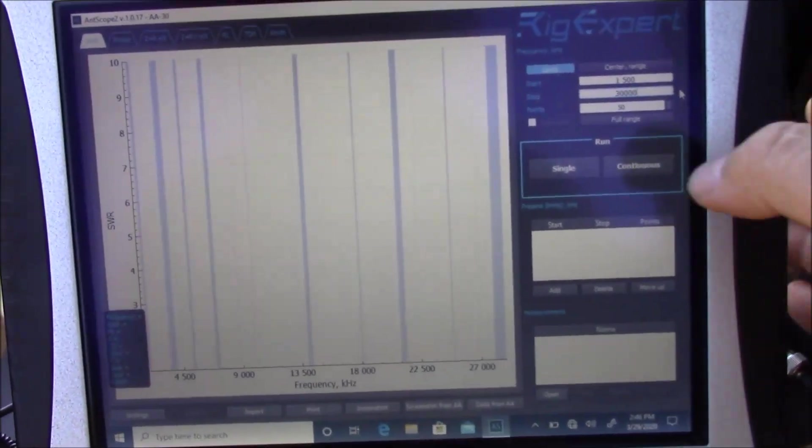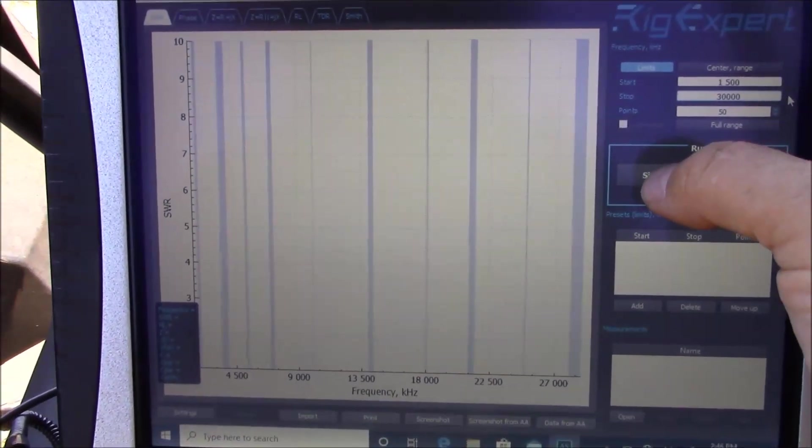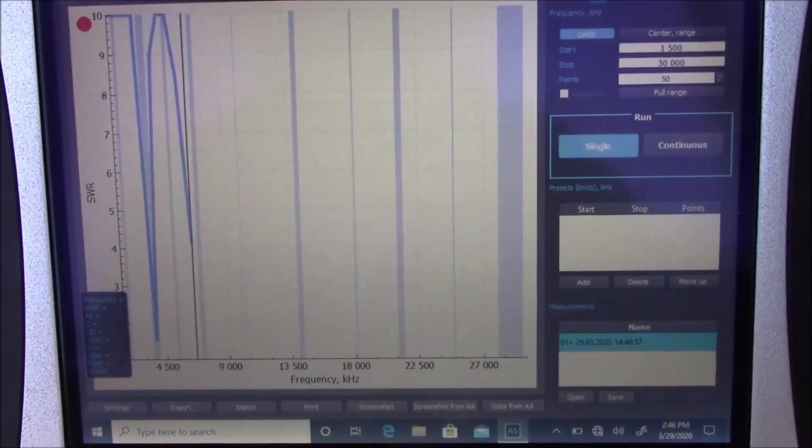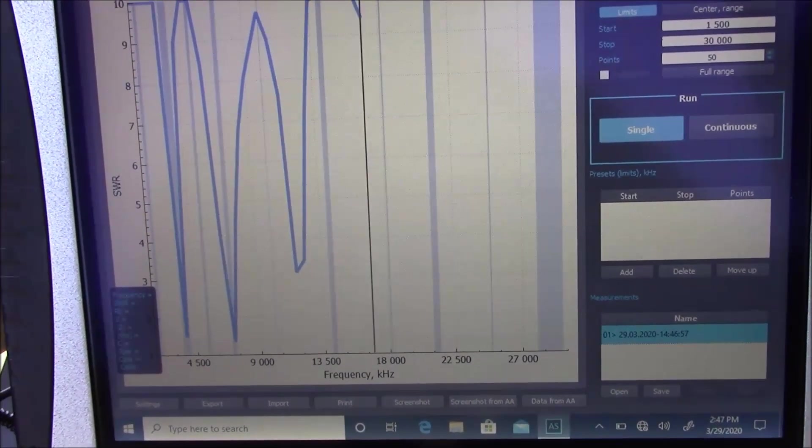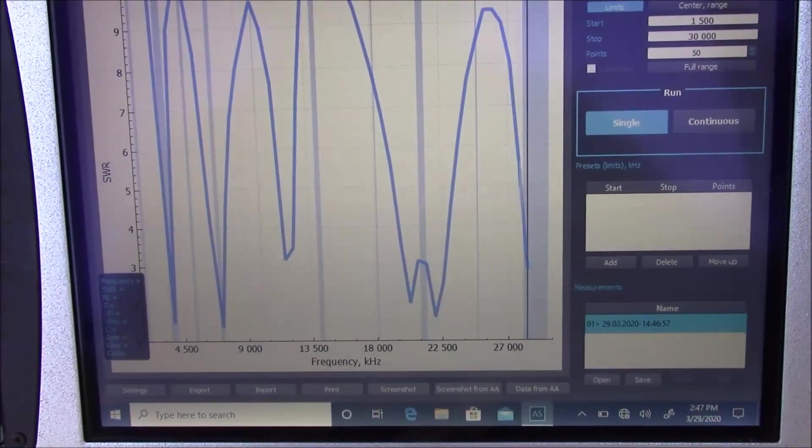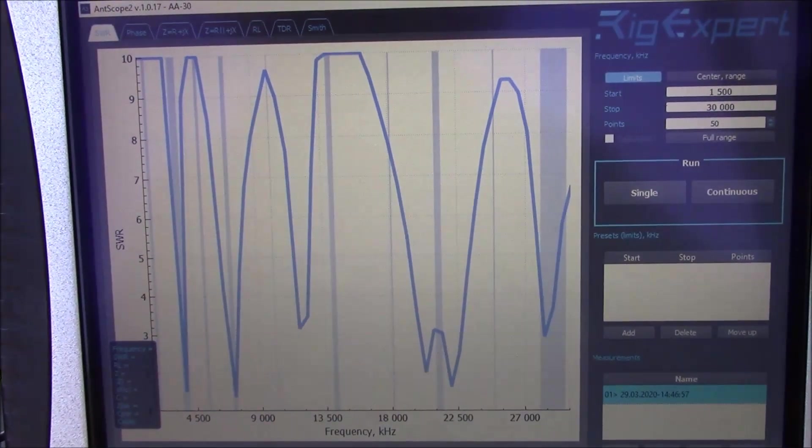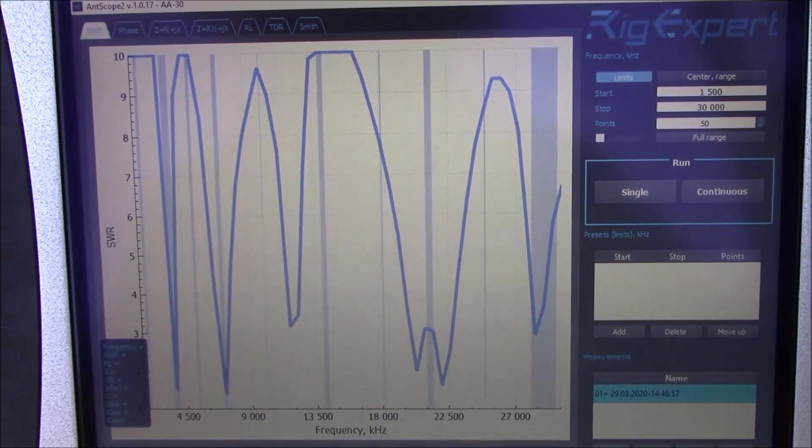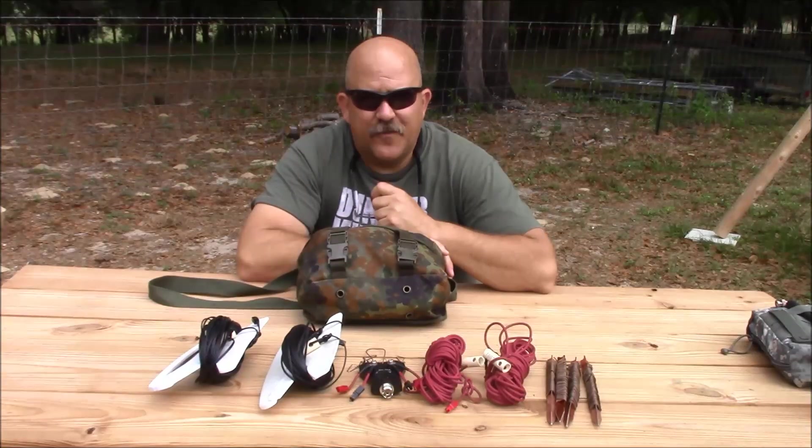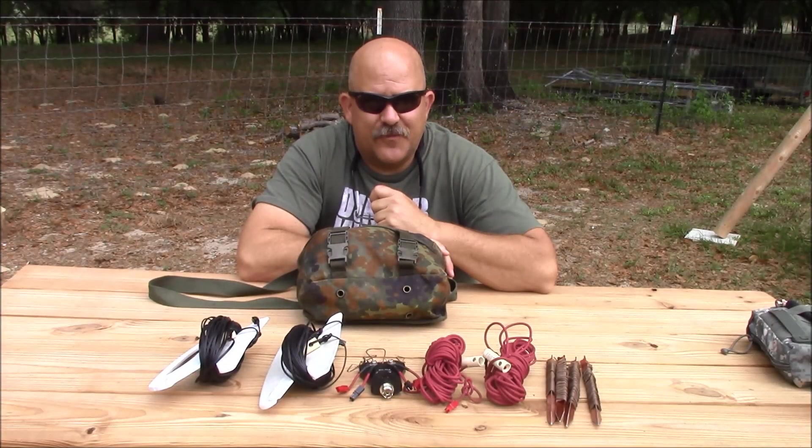For last, let's just go ahead and sweep the entire amateur band and see what our performance is going to be like here. And there we have it from 1.5 megahertz through 30 megahertz. I hope this helps. This is Brett from survival comms. Till next time.